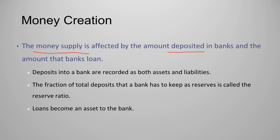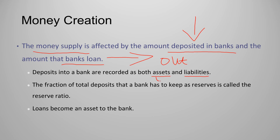The money supply is affected by how much people deposit in banks and how much the bank loans out. When there are deposits into the bank, money is coming in. When the bank makes a loan, money is going out. Deposits are liabilities because the bank has to pay that amount back to the customer. Loans are assets because customers must repay them.